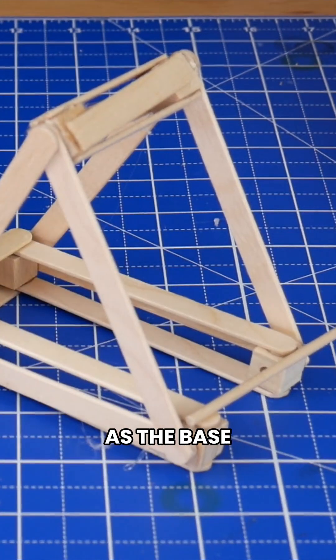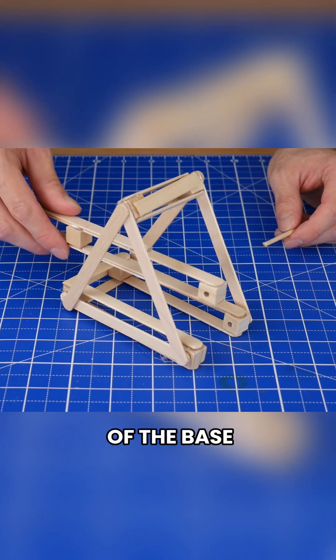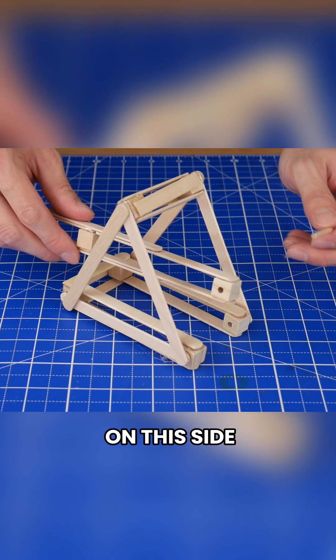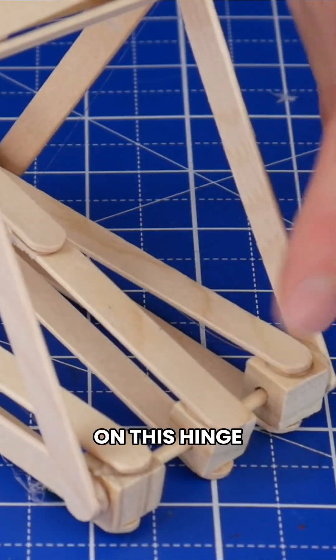Now put the catapult arm through the middle of the base with the cube on this side. The arm should be able to move up and down on this hinge.